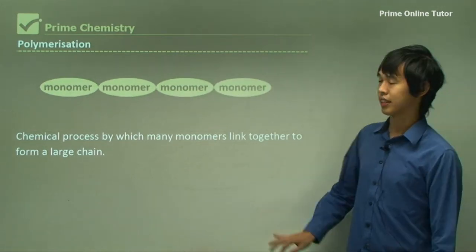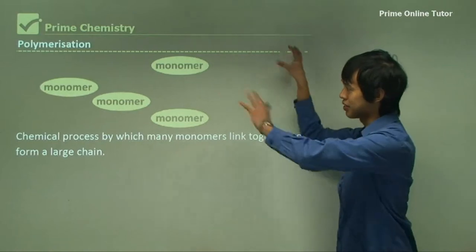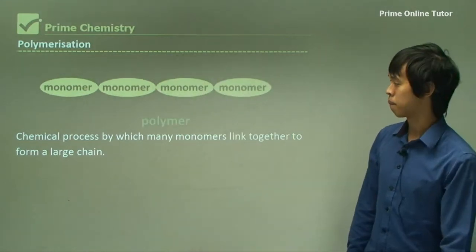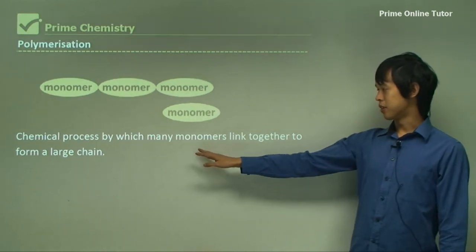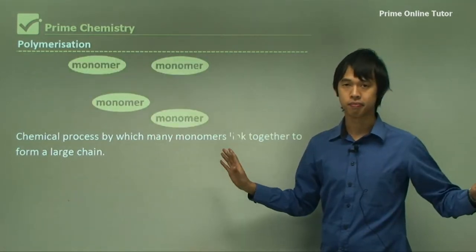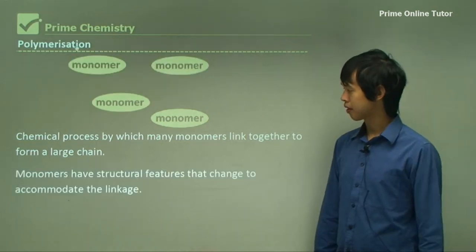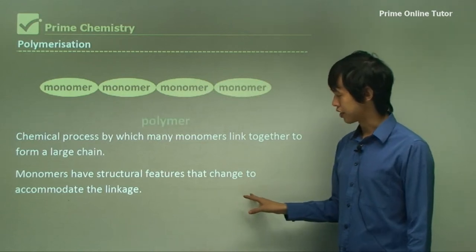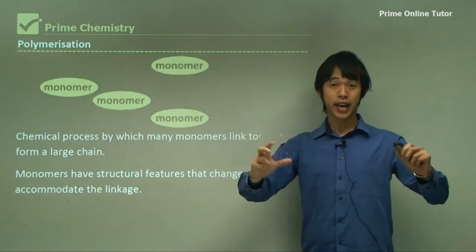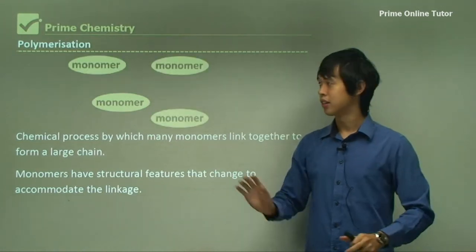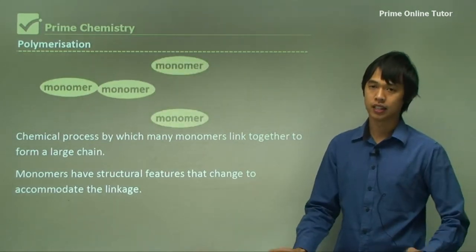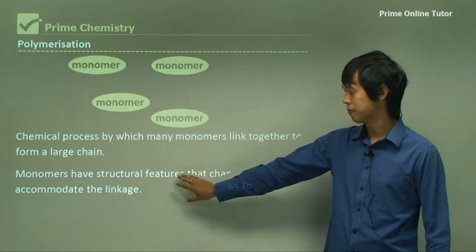The process is conceptually simple: lots of monomers scattered around are joined together into a chain, and the polymer comes out. The chemical process by which monomers link together to form a large chain is called polymerization. The monomers have structural features that may actually change shape or form so they can create the links together.